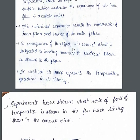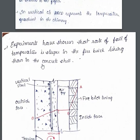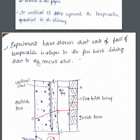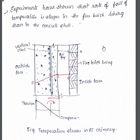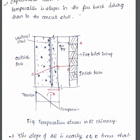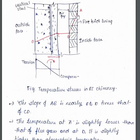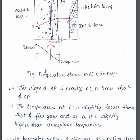As a consequence, the concrete shell is subjected to a bending moment in the vertical plane. Experiments have shown that the rate of temperature fall is steeper in the fire brick lining than in the concrete shell. The temperature gradient shows how temperature decreases from the fire brick lining to the outside of the chimney — T1 at the inside is highest, dropping through the lining and air gap, and further reduced at the outer concrete surface.